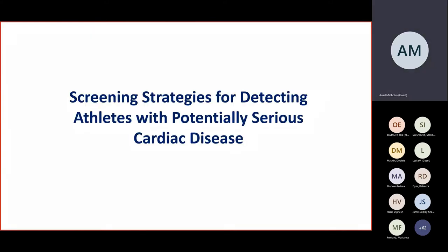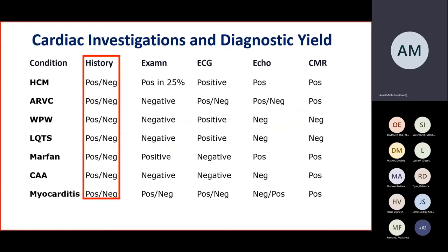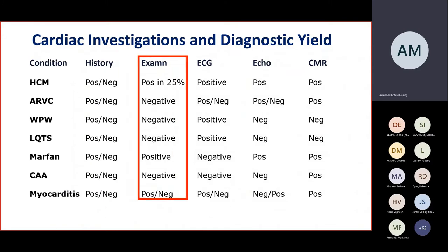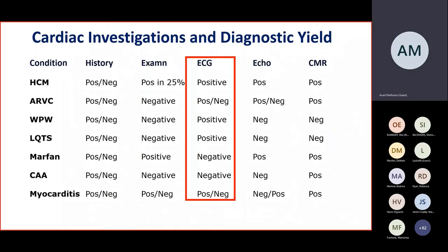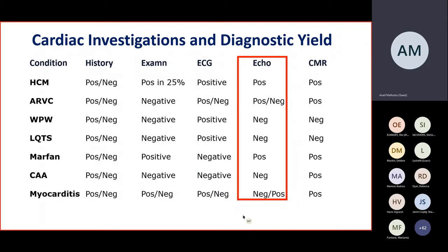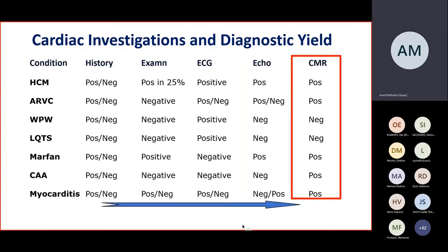Let's consider screening strategies for detecting serious cardiac disease. The causes are quite diverse, and no single screening test will identify absolutely everything. There's a balance to achieve between maximising effectiveness and obtaining a diagnostic yield. History alone has been shown to be a poor discriminator for cardiac disease, and examination isn't much better — perhaps identifying those with connective tissue disorders such as Marfan syndrome more readily. The ECG detects electrical diseases and most of the main cardiomyopathies, whilst the echo may actually miss electrical conditions. Cardiac MRI may also miss electrical conditions but is the gold standard imaging modality for cardiomyopathy, connective tissue issues, coronary artery anomalies, and myocarditis.